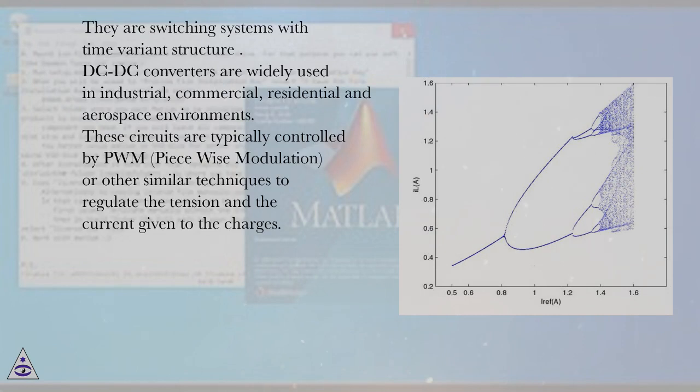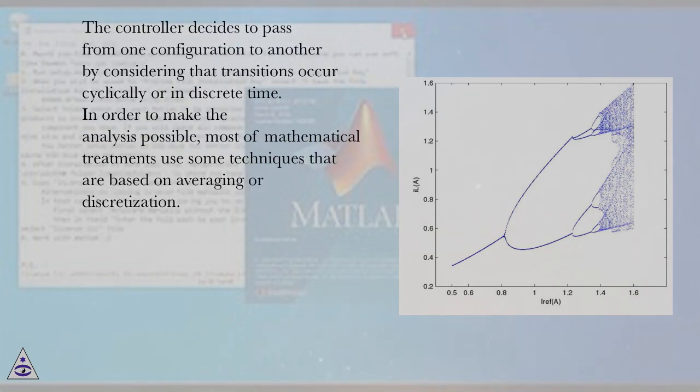DC-DC converters are widely used in industrial, commercial, residential and aerospace environments. These circuits are typically controlled by PWM, pulse width modulation, or other similar techniques to regulate the tension and the current given to the charges. The controller decides to pass from one configuration to another by considering that transitions occur cyclically or in discrete time.